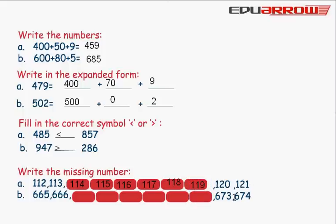This is 665, 666, 673, 674. It is also simple counting. We write here 667, 668.